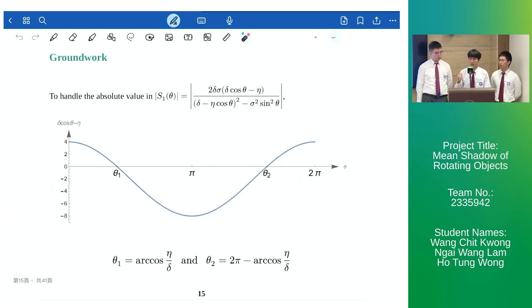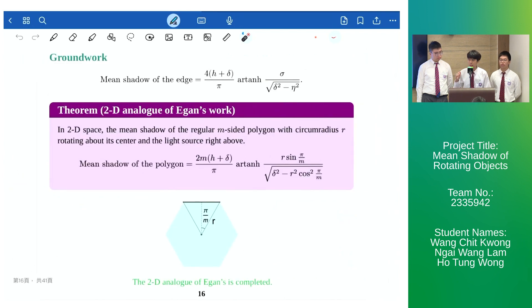To handle the absolute value of s1 theta we determine the sign changing points which is given by theta1 and theta2. And substituting them back into the anti-derivative we have the mean shadow of the edge. And by reassembling the edges into a regular polygon we have completed the 2D analog of Egan's work.